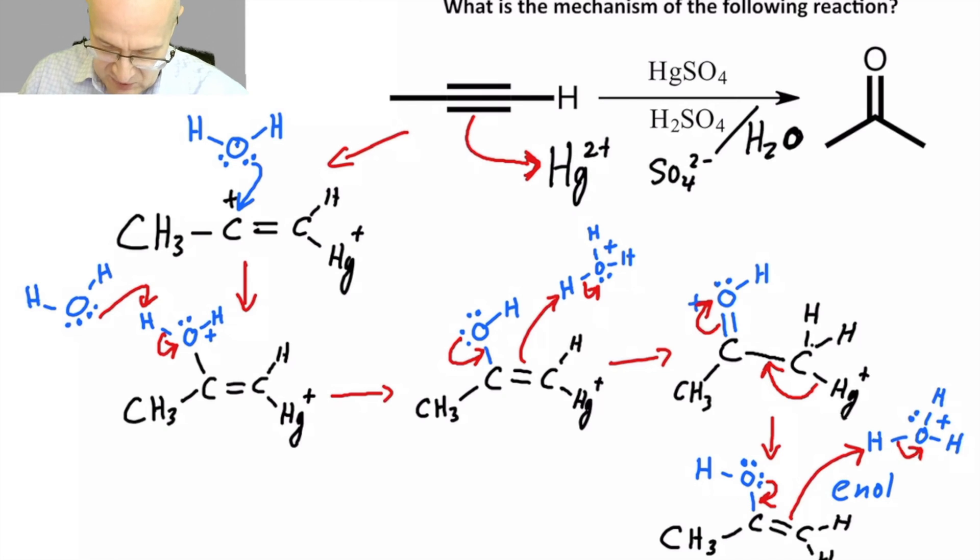Very similar to what we saw here. A lone pair kicks down, forms a pi bond between carbon and oxygen. Pi bond deprotonates hydronium, giving you essentially a protonated ketone.